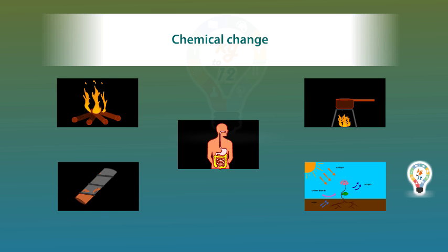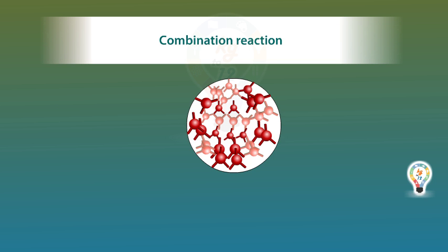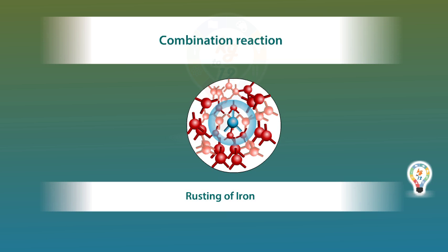Let's understand some types of chemical reactions. Combination Reaction (Synthesis): In this reaction, two or more substances combine chemically to form a single new substance. Example: rusting of iron.